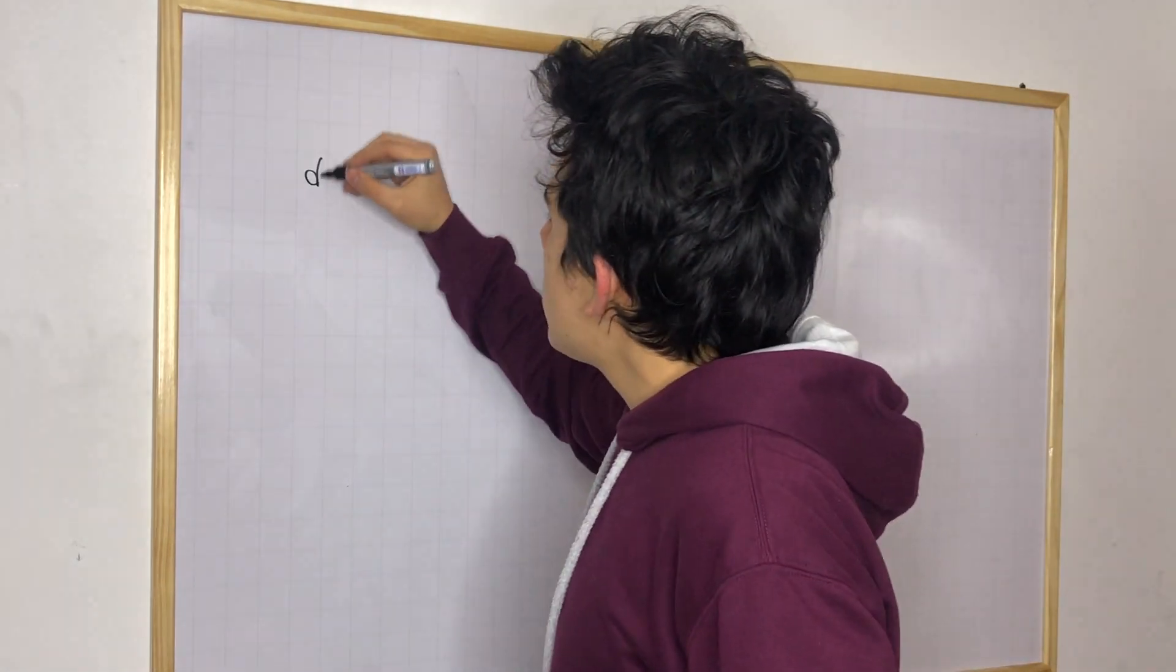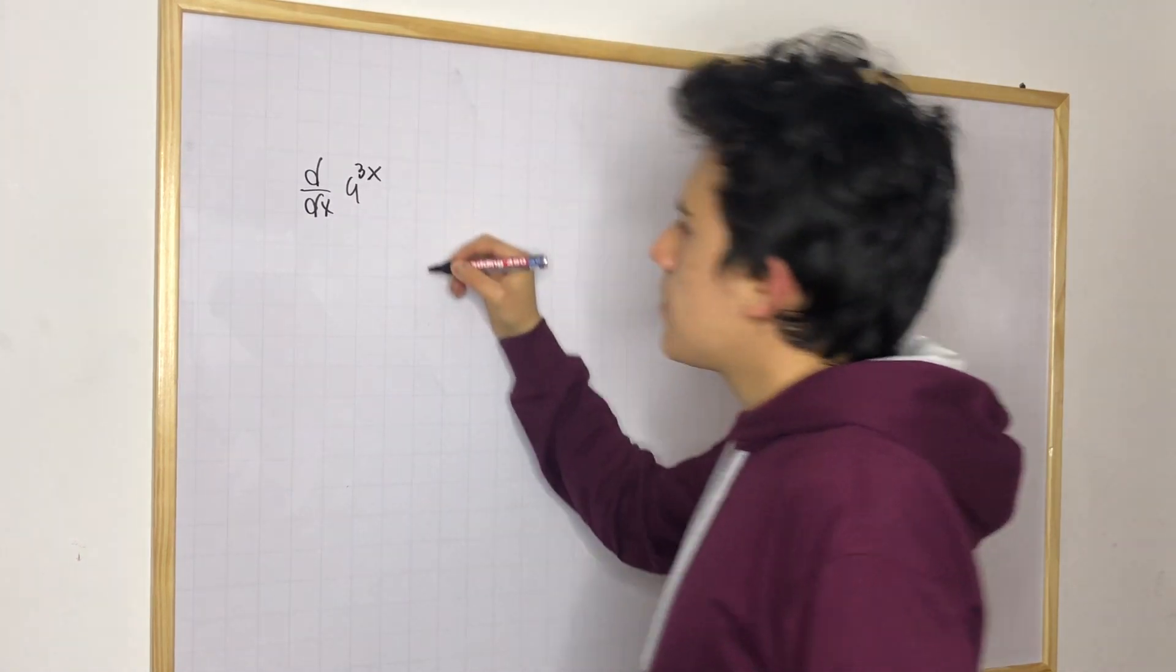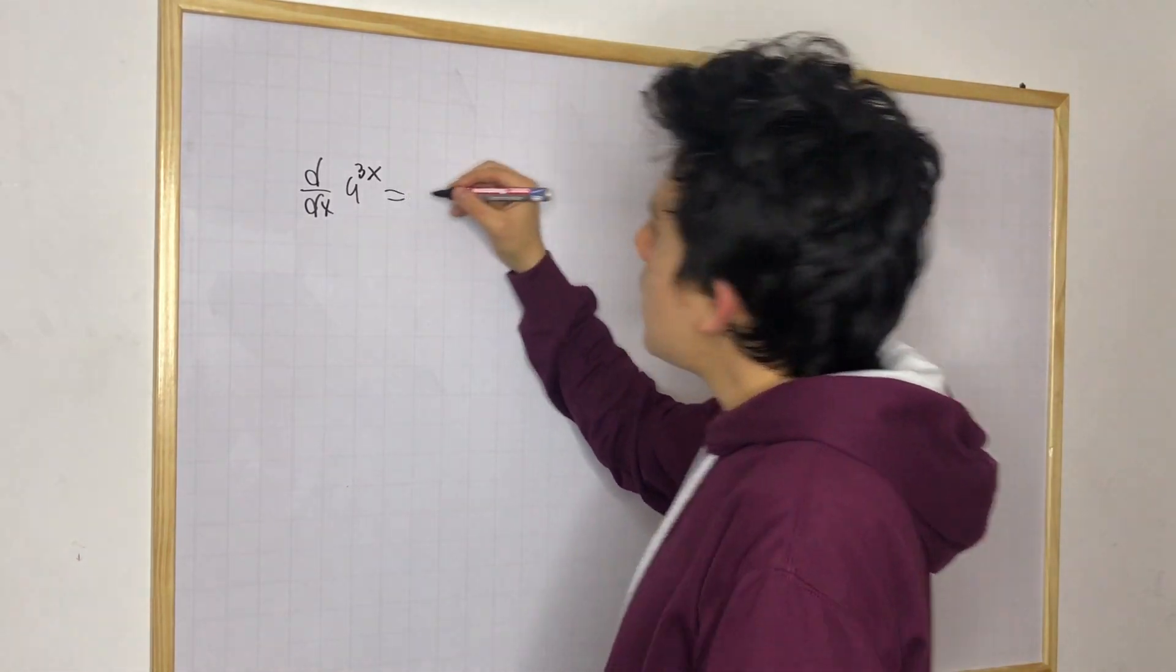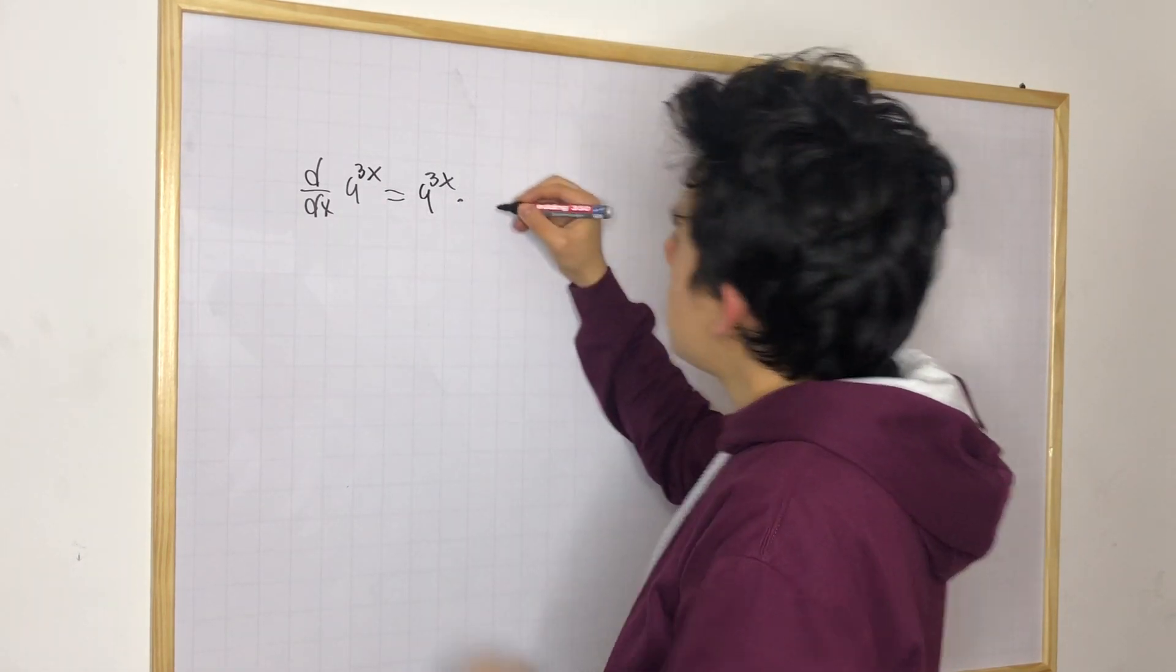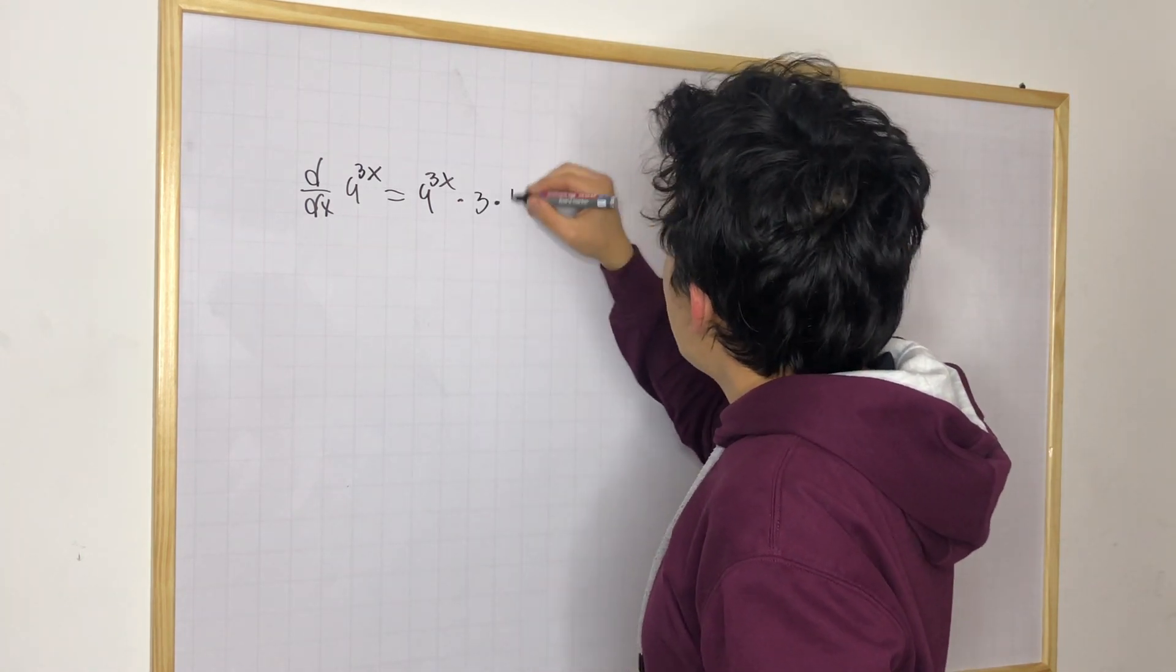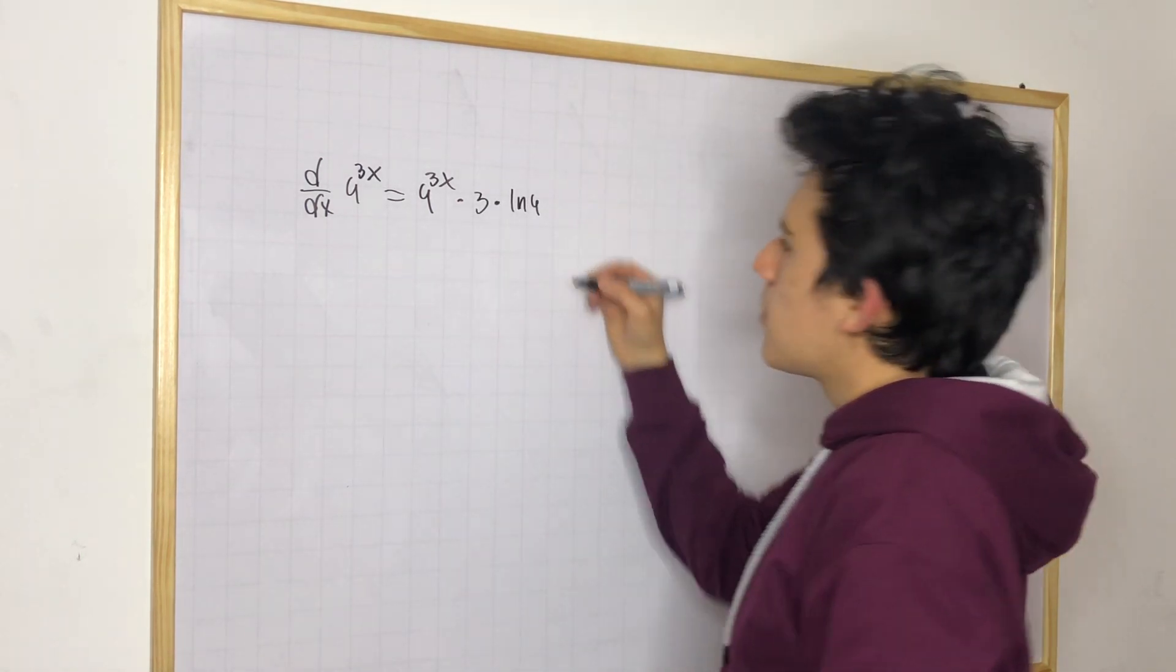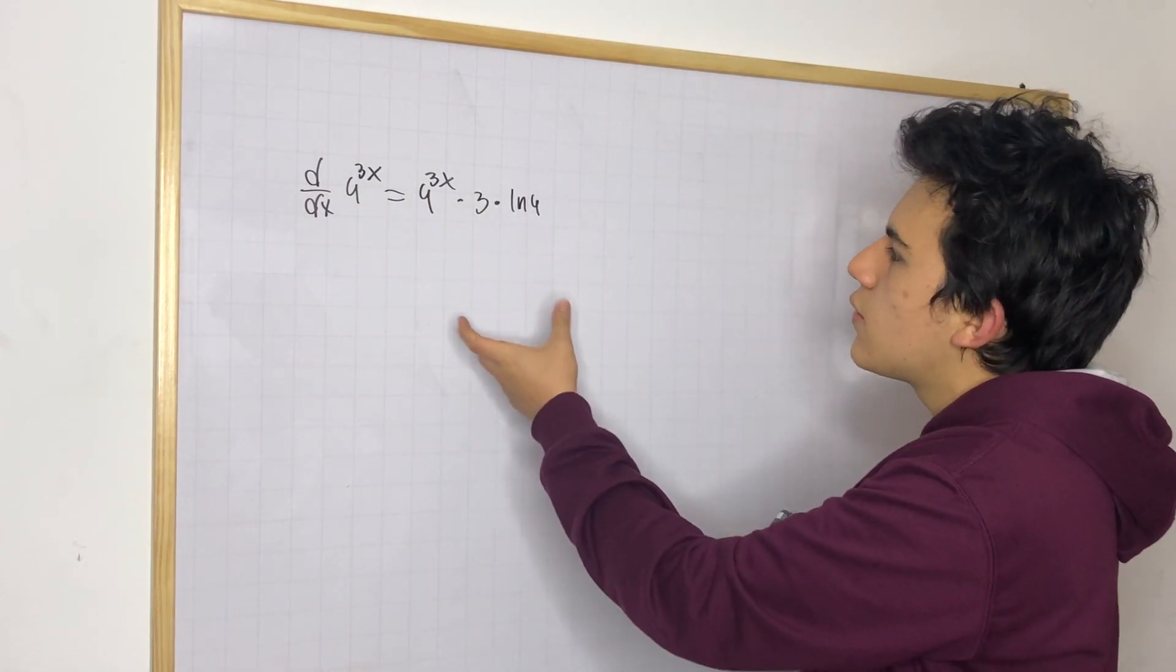Let's do this example. What is the derivative of 4 to the 3x? We know we need to rewrite again the first expression that we have and then multiply by the derivative of the exponent, which is going to be 3 times the natural log of 4, because 4 is the base that we have. Remember, this is the pattern that we need to follow.